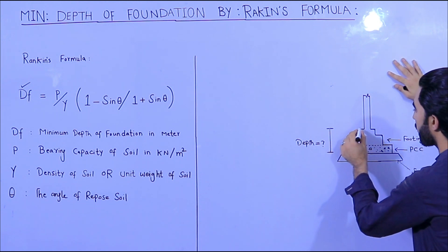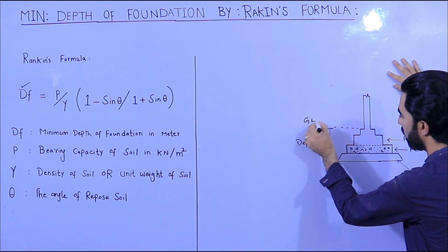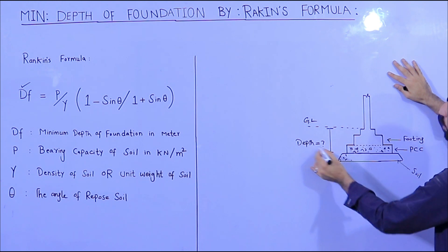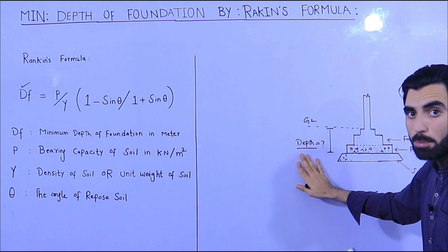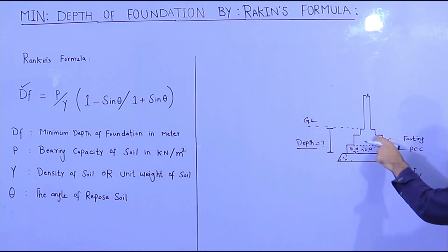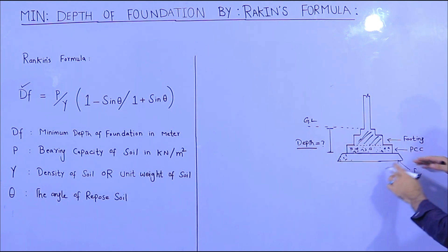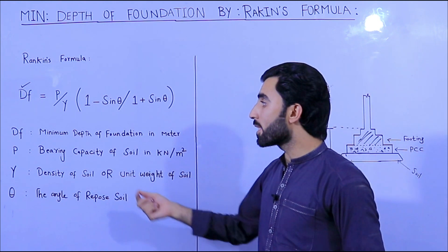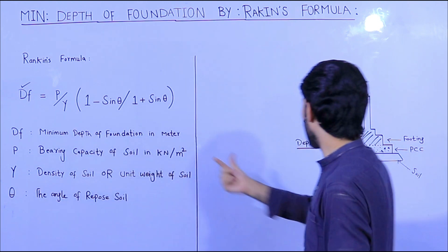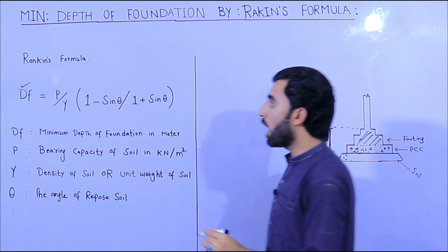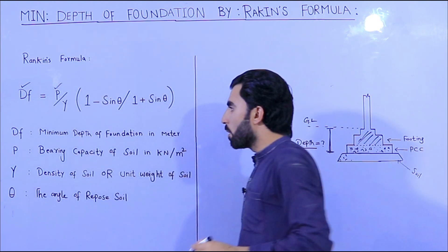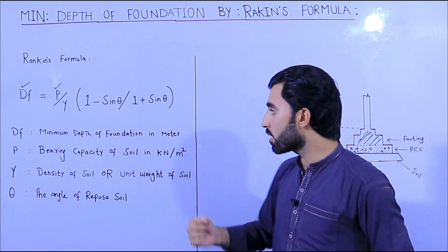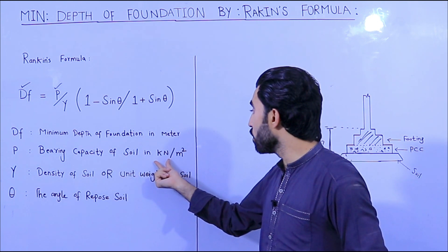You can see here in this diagram — this is the ground level and here is the soil. So how to decide the suitable depth of foundation? With the help of Rankine's formula we will find the depth of foundation. You can see this is the footing and this is PCC. From the footing base up to the ground level, we will find the depth of foundation. So df means minimum depth of foundation. Now, p is the bearing capacity of soil in kilonewton per meter square.